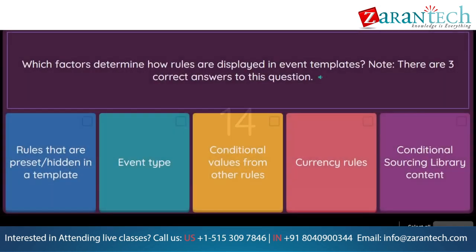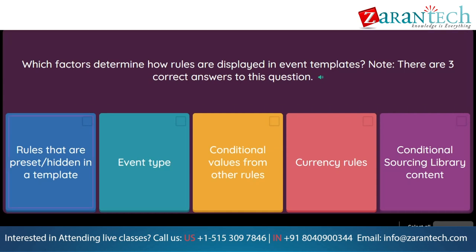Question: Which factors determine how rules are displayed in event templates? Note, there are 3 correct answers to this question. Option 1: rules that are preset/hidden in a template. Option 2: event type. Option 3: conditional values from other rules. Option 4: currency rules. Option 5: conditional sourcing library content.